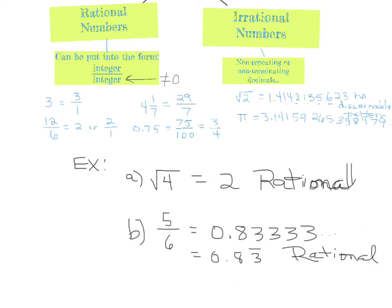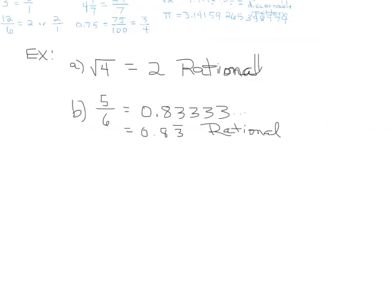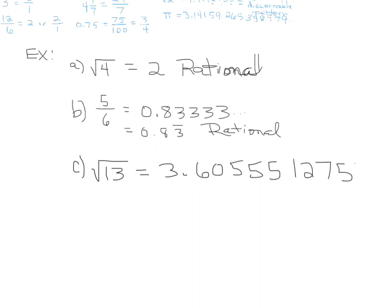One more example: C, the square root of 13. Put this in your calculator and you get 3.60555127546... et cetera. It may appear to have some fives, but there is no discernible repeating pattern. So this one is irrational.